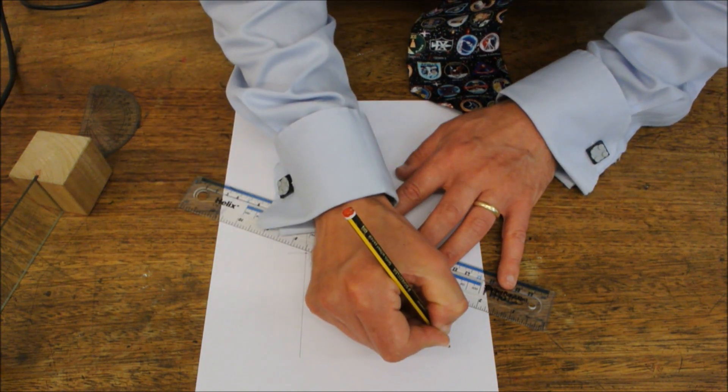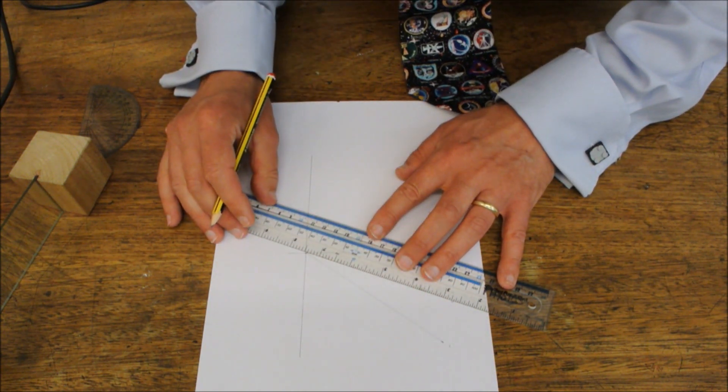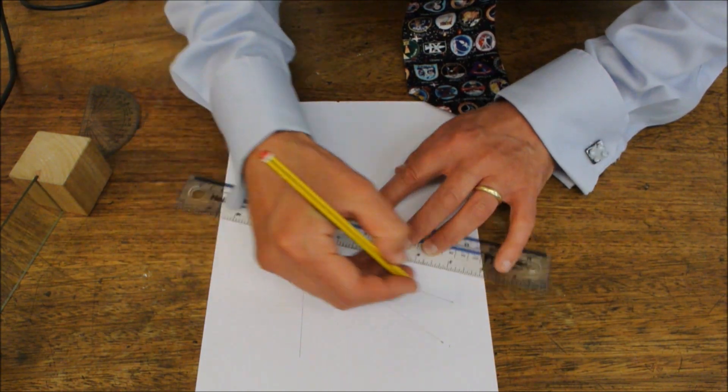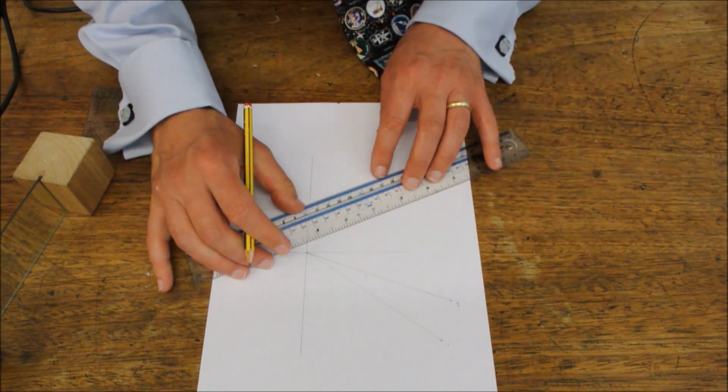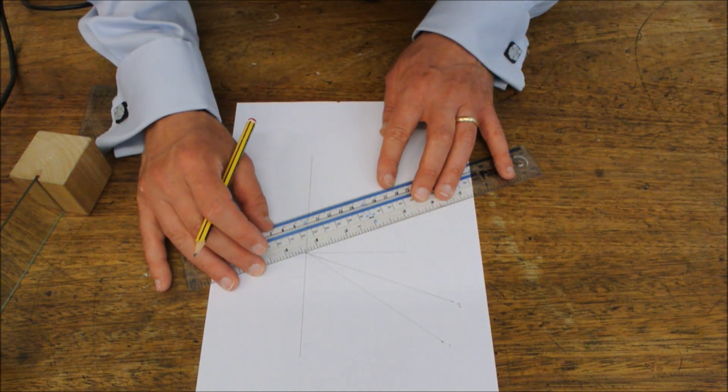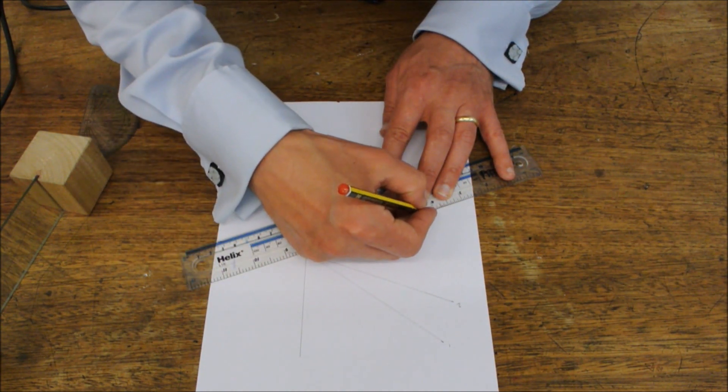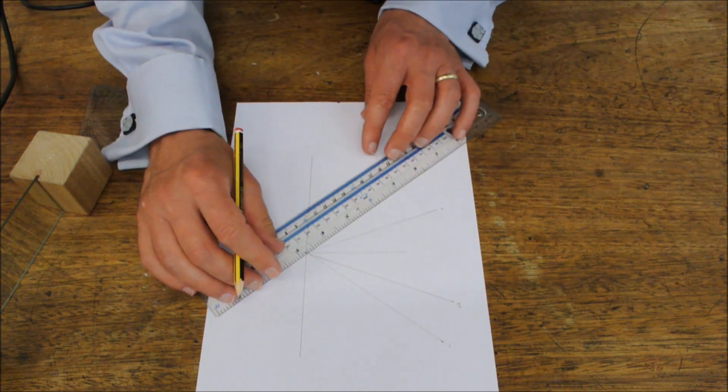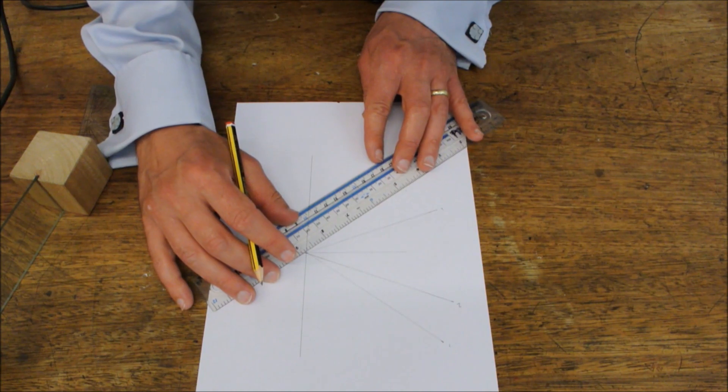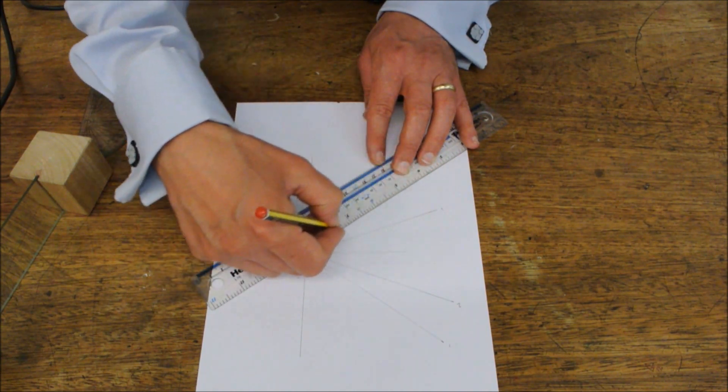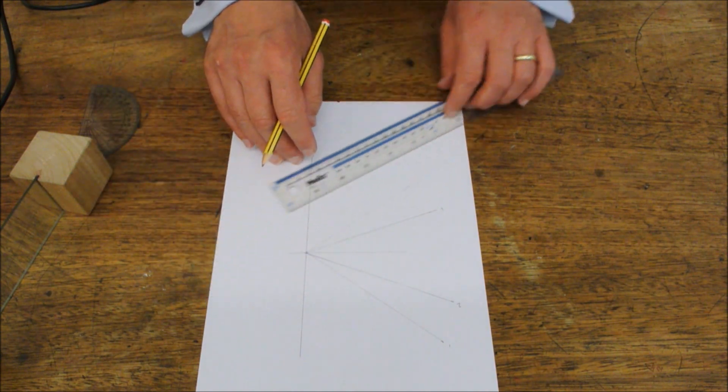We then construct the rays using a ruler because we know that light travels in a straight line. So that was reflected ray one. That was reflected ray two. Incident ray two. Incident ray one.